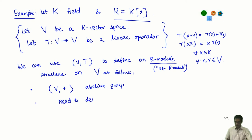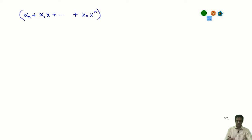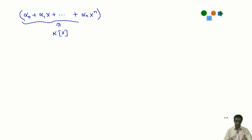What do we need to define an R-module structure? Well, V is already an abelian group, so there is nothing further to do there — I already have an addition on V. What I need to define is really the scalar multiplication. I need to define the scalar multiplication map k[x] cross V to V, which satisfies those four axioms.